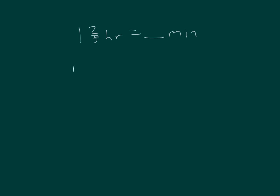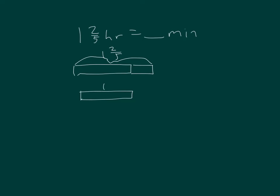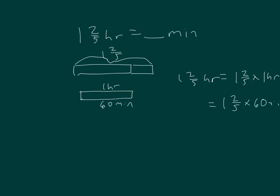One and two-fifths hours equals how many minutes? There's one and there's two-fifths. One hour equals sixty minutes, so I know our answer is going to be bigger than sixty minutes. One and two-fifths equals seven-fifths times sixty. Five becomes a one, sixty becomes twelve, and that's seven times twelve, which is eighty-four minutes. One and two-fifths hours equals eighty-four minutes.